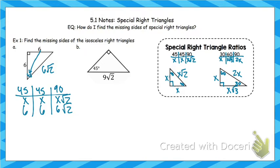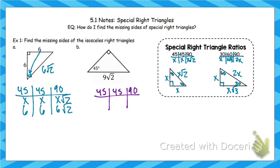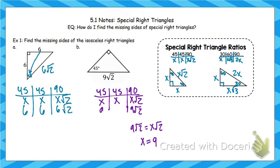Let's look at example B. The 9√2 is across from 90. This is a 45-45-90 triangle, so the ratio is x, x, x√2. Since 9√2 is across from 90, we set x√2 equal to 9√2, which gives us x equal to 9. So across from each 45-degree angle is 9. My two missing sides are 9 and 9.